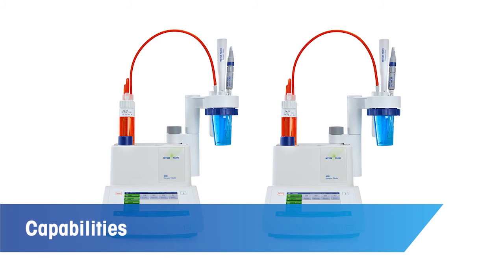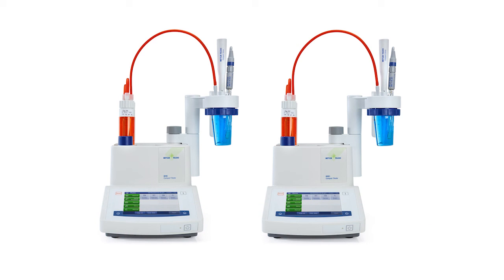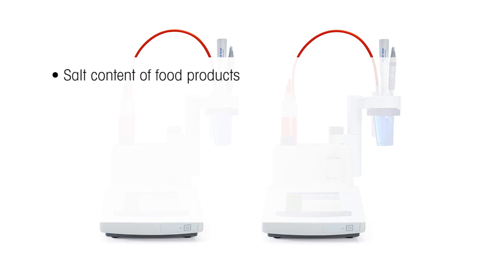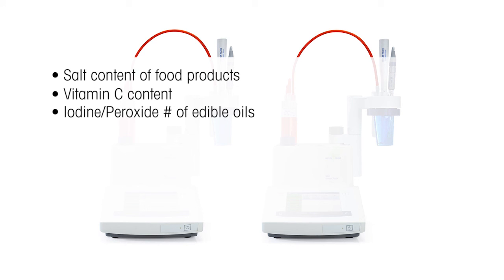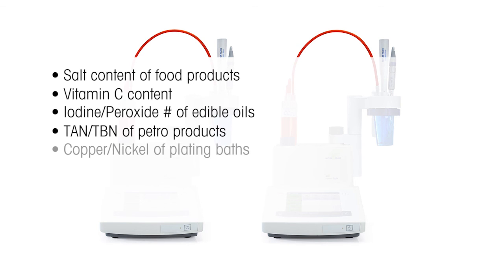This demonstration covered a basic acid-base application on the compact titrators and hopefully showcased its ease of use and flexibility. Other applications include salt content of food products, vitamin C content, iodine and peroxide number of edible oils, TAN and TBN of petro products, copper and nickel of plating baths, and water hardness. Greater detail on their capabilities can be found in the Instruments brochure at mt.com/titration.